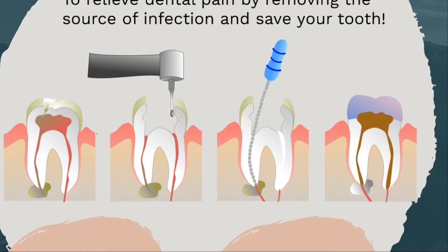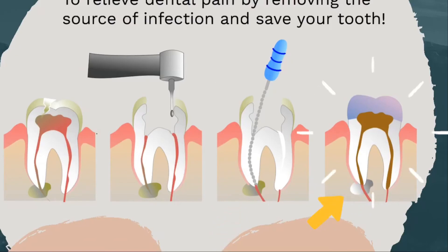RCT consists of mainly four steps. In the first step, we isolate the tooth to be treated from saliva. In the second step, we create access and remove the infected pulp. Third step, cleaning and shaping of the root canal will be done. Fourth step, the root canal is then sealed with a material called gutta-percha. As the final step, a temporary filling will be placed which will then be replaced by permanent restoration or a crown.